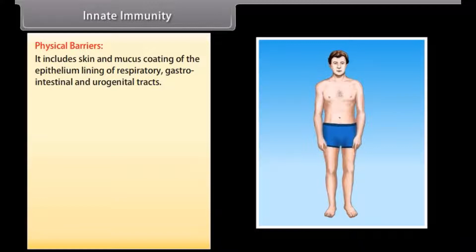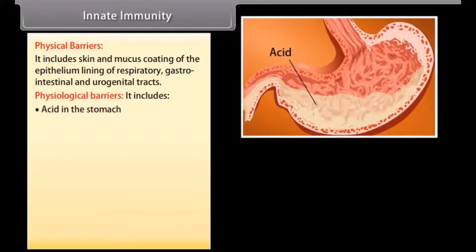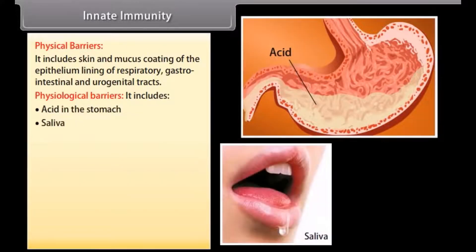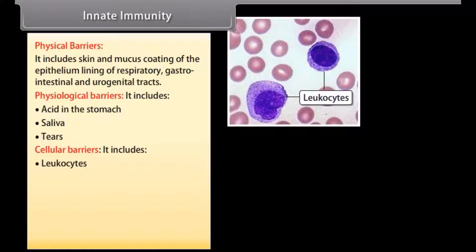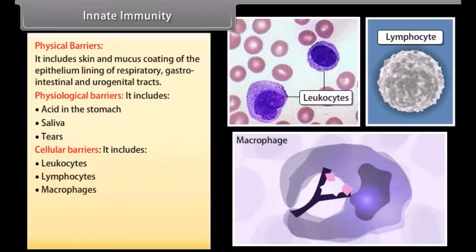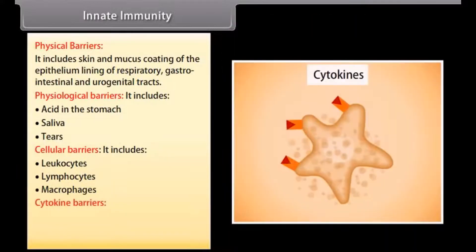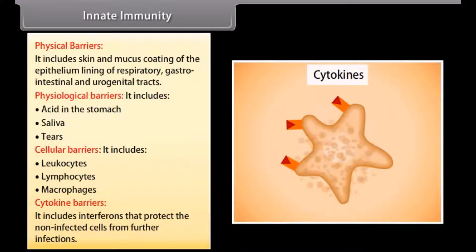Physical barriers include skin and mucous coating of the epithelium lining of the respiratory, gastrointestinal, and urogenital tracts. Physiological barriers include acid in the stomach, saliva, and tears. Cellular barriers include leukocytes, lymphocytes, and macrophages. Cytokine barriers include interferons that protect non-infected cells from further infections.